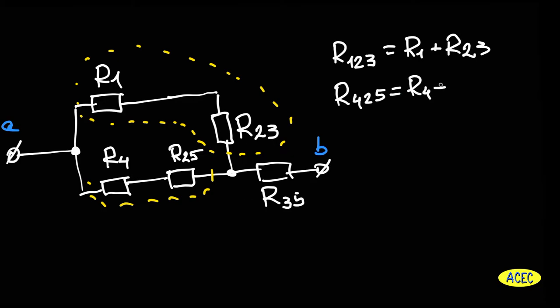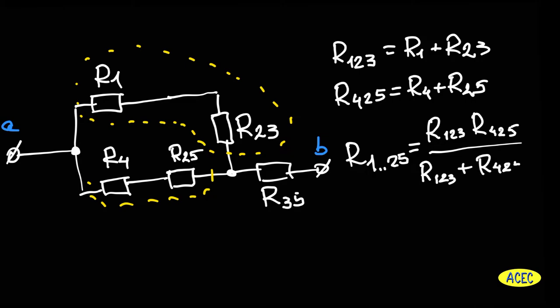And now we can find the equivalent resistance of two resistors which are connected in parallel mode. The last we have to find the total resistance of the whole circuit.